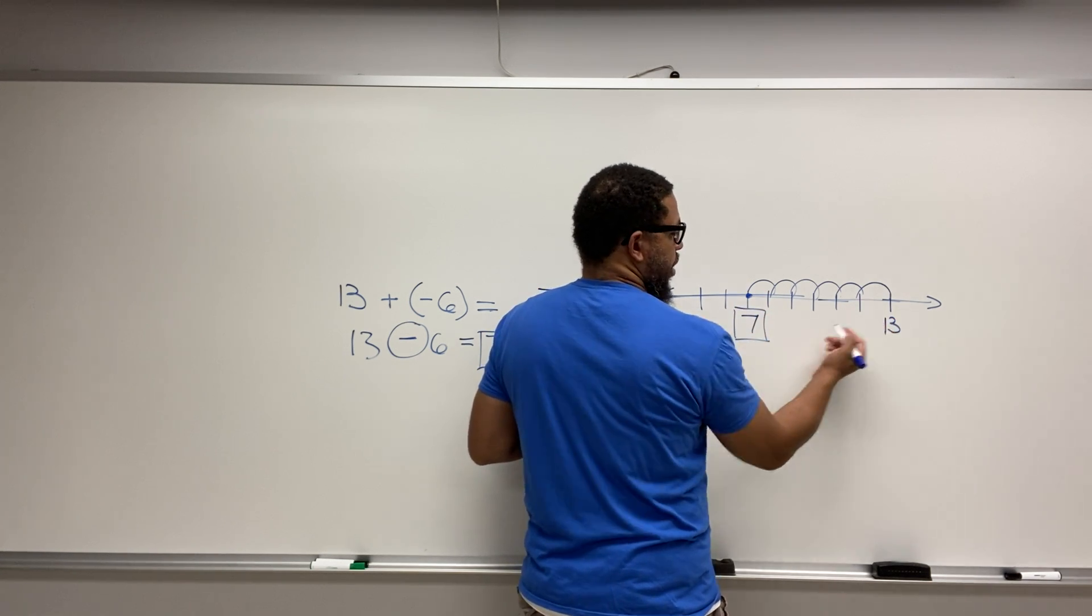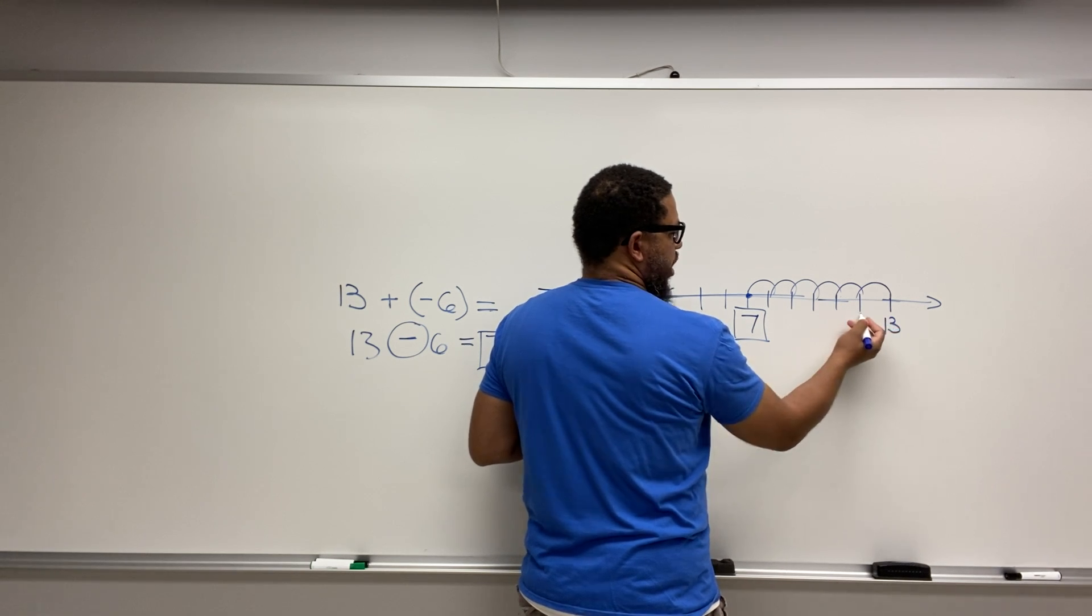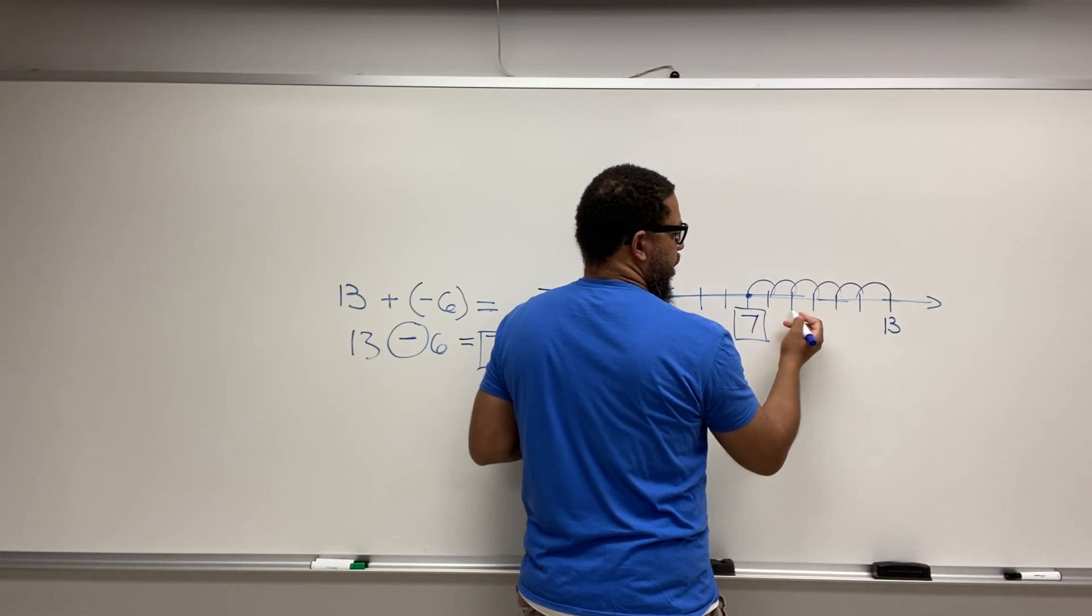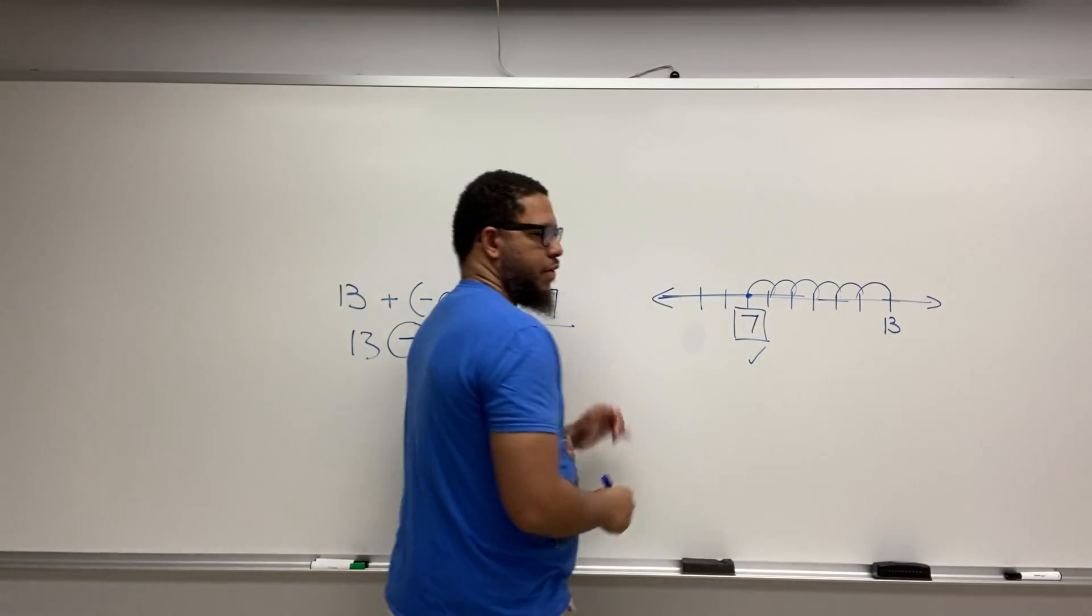So that's my answer. Because think about it. If my numbers are getting smaller, that means I'm going 13, 12, 11, 10, 9, 8, 7. And that's our answer right there.